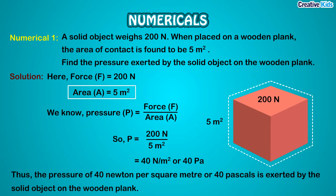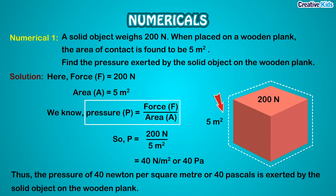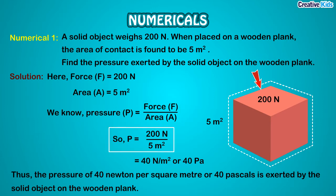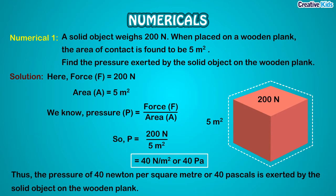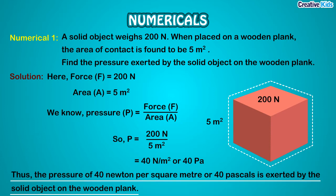Area of contact A = 5 m². The formula of pressure is force divided by area, so P = F/A. Force is 200 N, area is 5 m². Dividing 200 by 5, we get 40. So the pressure is 40 N per meter square, or 40 Pascals, exerted by the solid object on the wooden plank.